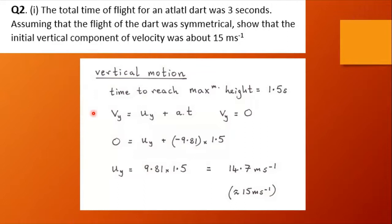t vertically, getting to the highest point again, that final vertical velocity is zero. So zero equals u_y minus 9.81 times 1.5, and that gives us an answer of 14.7 ms^-1, about 15 meters per second.